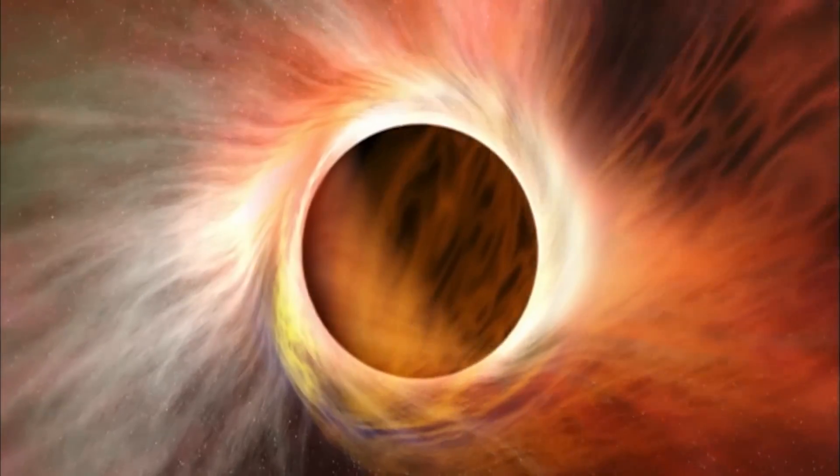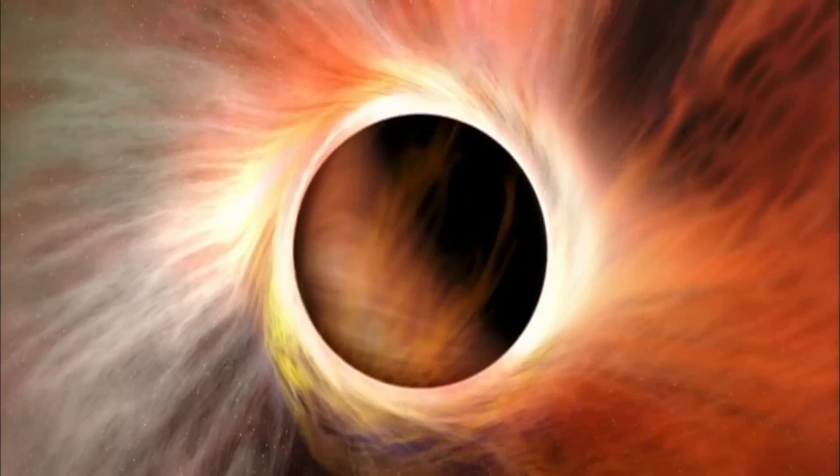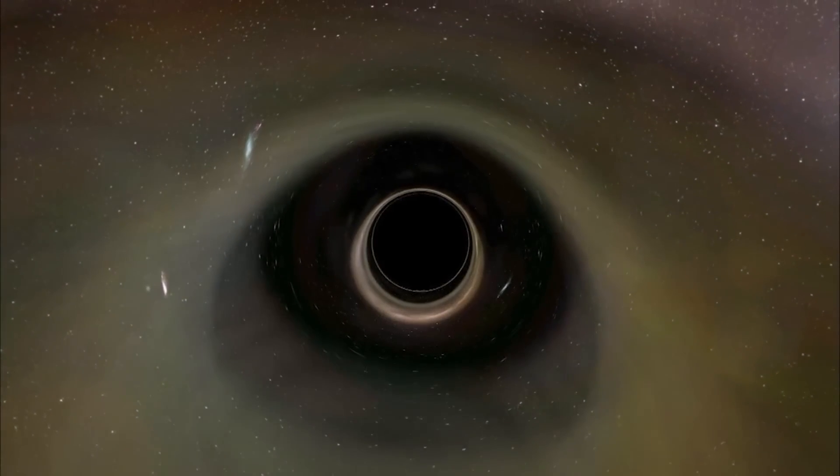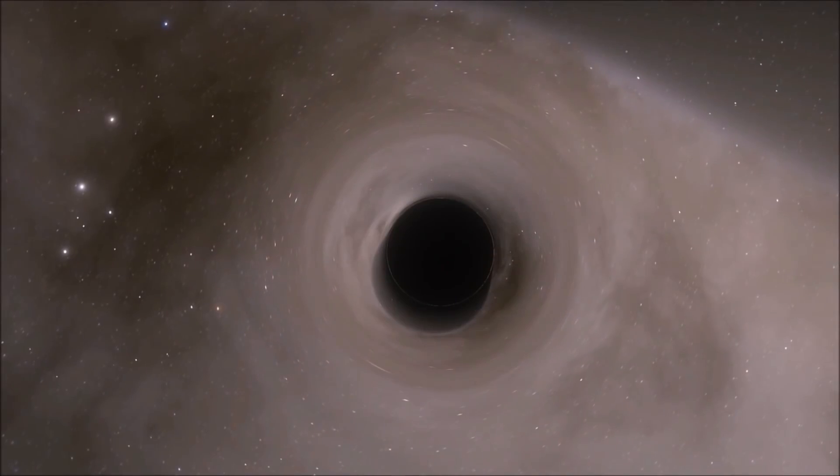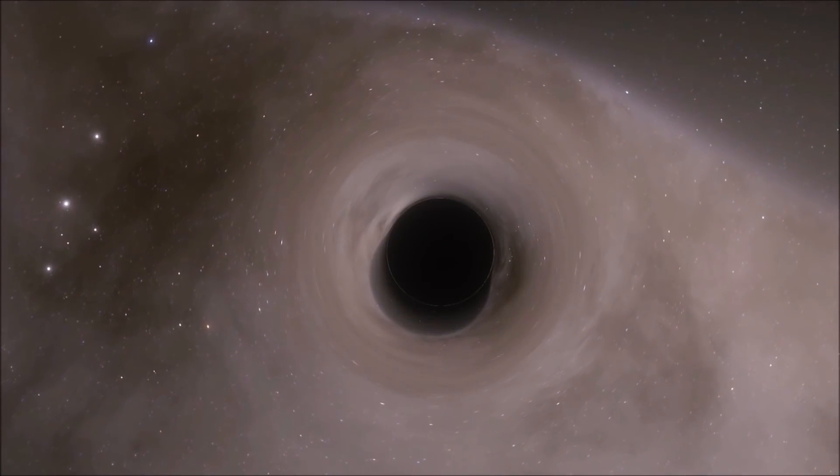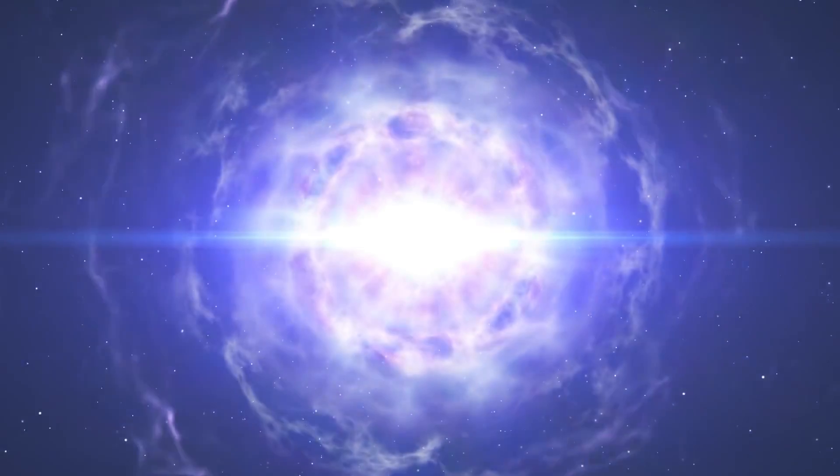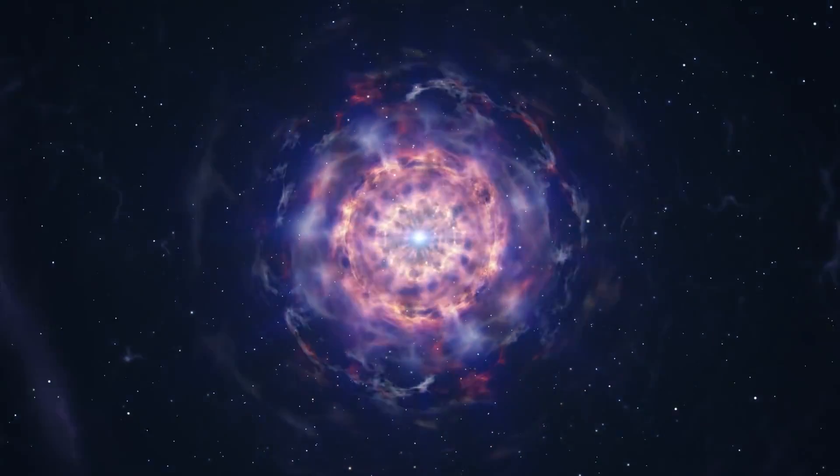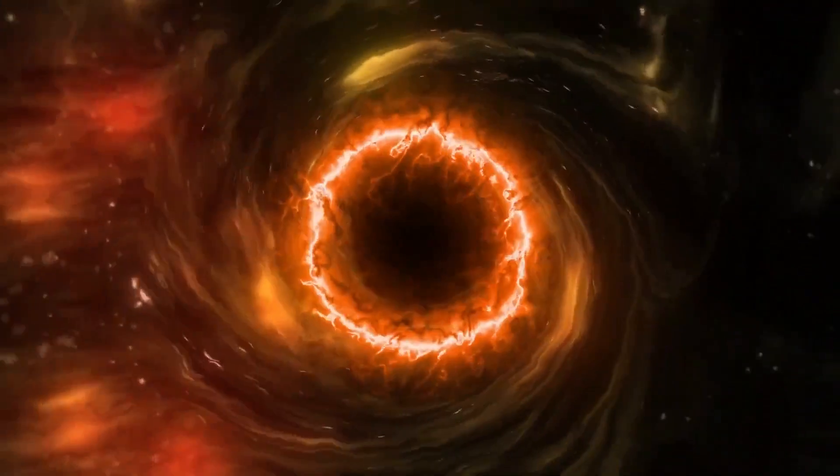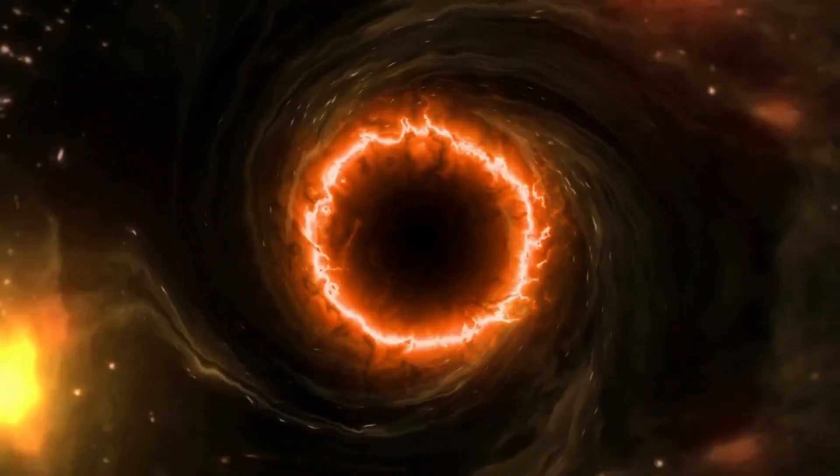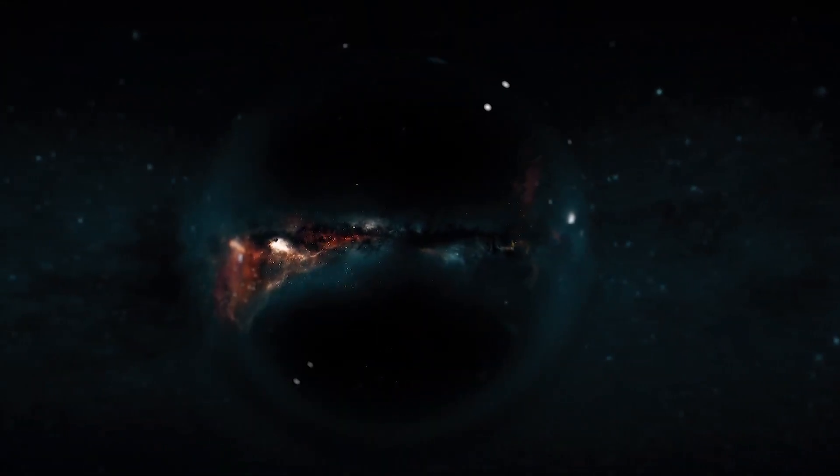The least massive black hole known to scientists at the moment is located in the V616 Monocerotis system and has a mass on the order of three solar masses. In fact, according to current understanding, black holes with a mass less than about 2.2 solar masses cannot form within the generally accepted mechanism of gravitational collapse of the most massive stars at the end of their evolution. However, it is not excluded that in nature there exists, or more accurately, existed, another mechanism for the formation of black holes.